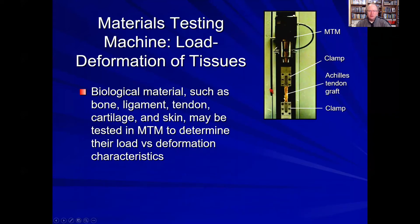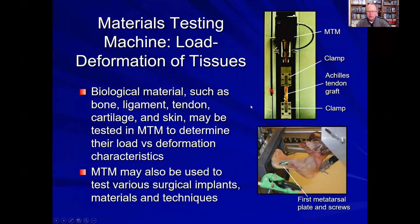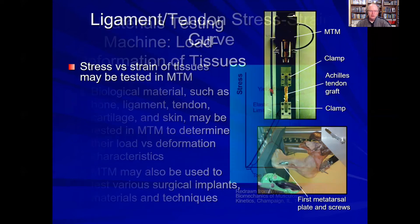One of the instruments used in experimental laboratories to measure stresses and strains are materials testing machines. Biological materials such as tendons, ligaments, bone, cartilage, or even skin can be placed into a materials testing machine. For example, with an Achilles tendon graft, we can pull on it with a clamp attached at each end and measure the amount of force, then deduce the stress and strain of that material. We can also use various surgical implants in materials testing machines to determine which construct of surgical fixation is the strongest.